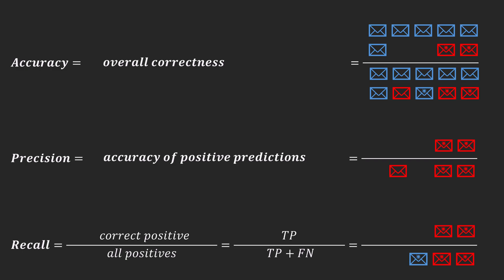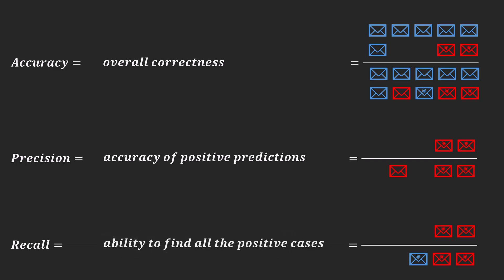And recall measures the model's ability to find all positive cases, so how many spams we catch in our case. Higher values for all these metrics mean better model performance.